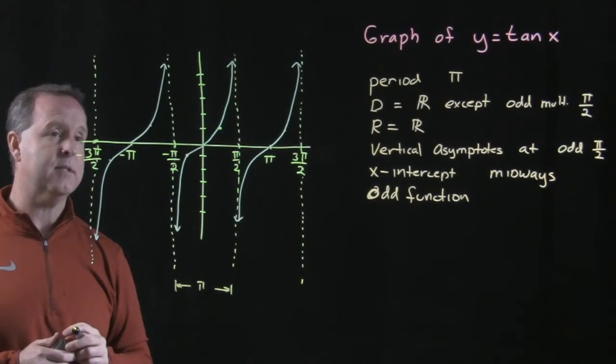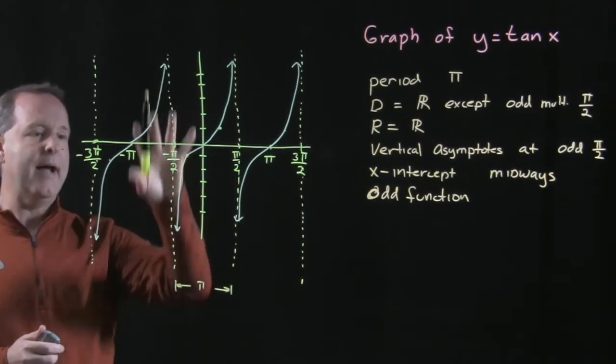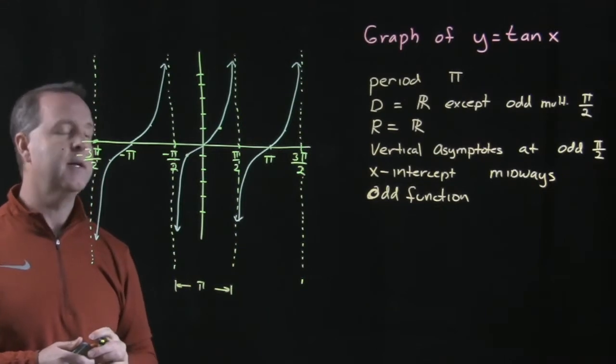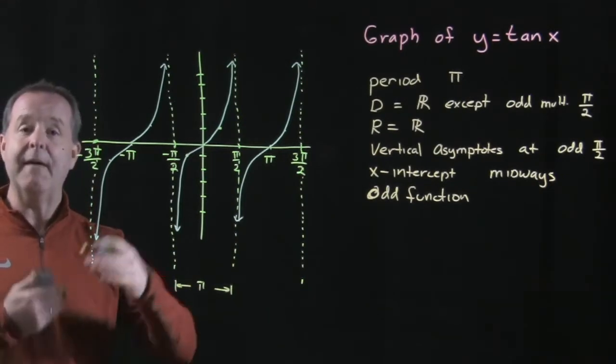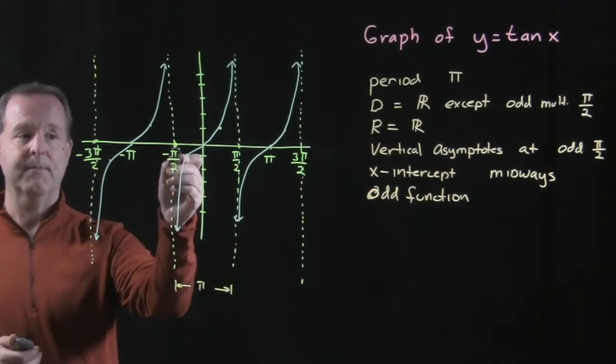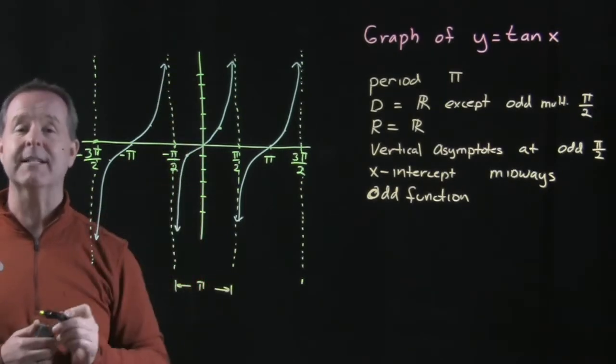Its range is all real numbers. There's no value on the y axis that I cannot get with the tangent value. There are vertical asymptotes at those odd values. Remember we talked about where it's undefined? It's undefined at places where we have a vertical asymptote.